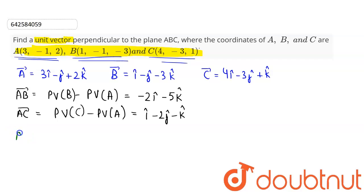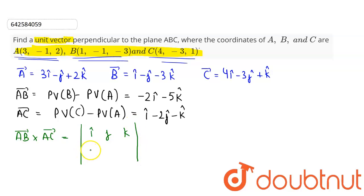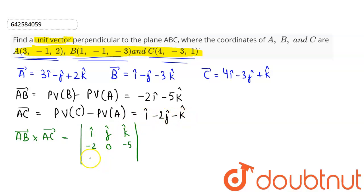Now let us find the cross product of AB and AC. Vector AB cross vector AC is computed using a determinant with i, j, k in row 1. Row 2 contains the coefficients of vector AB: minus 2, 0, minus 5. Row 3 contains the coefficients of vector AC: 1, minus 2, minus 1.